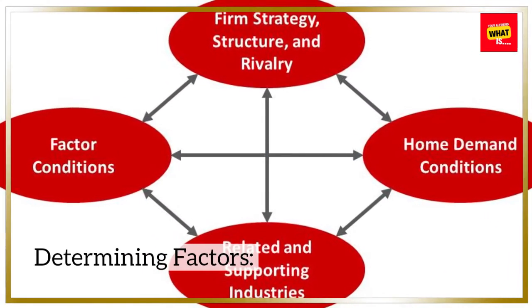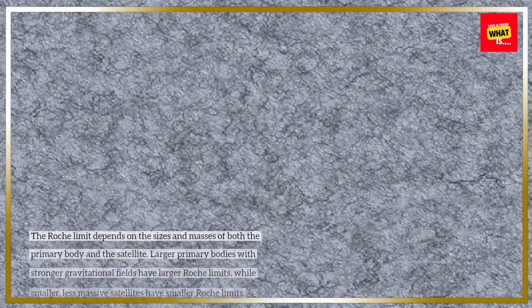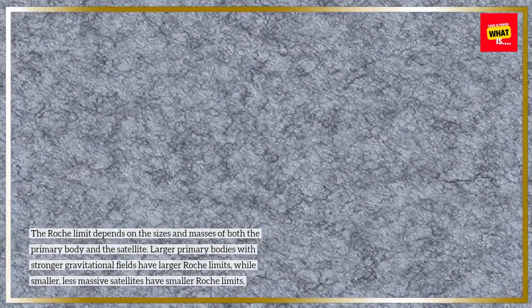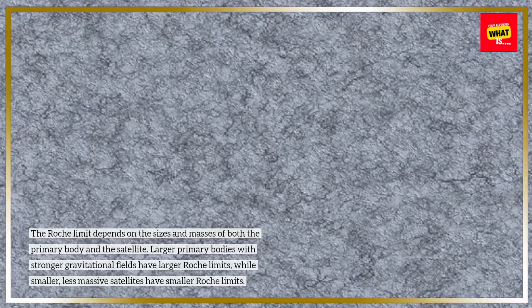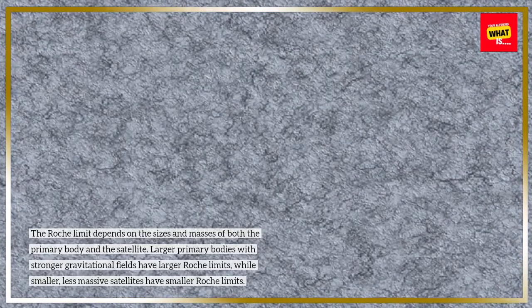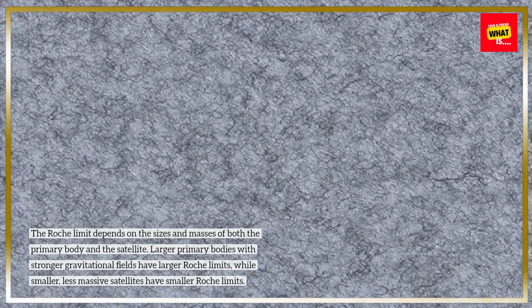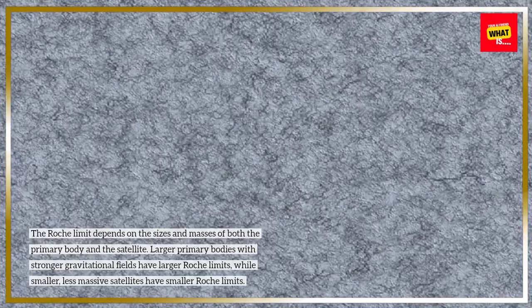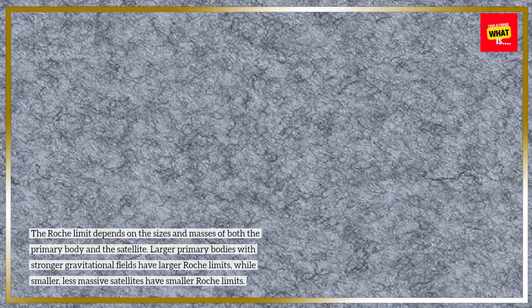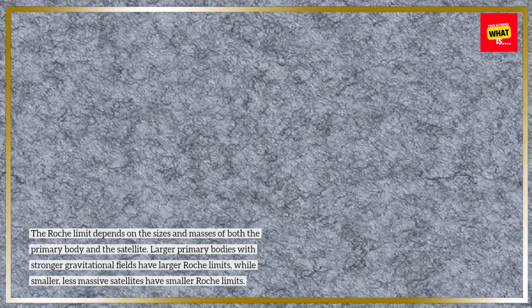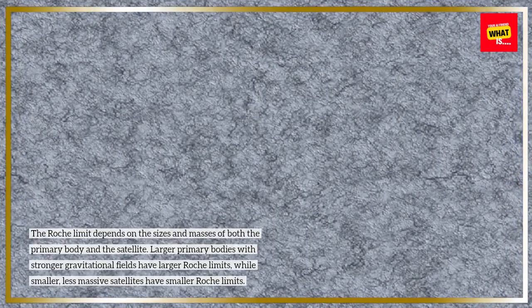Determining factors: the Roche limit depends on the sizes and masses of both the primary body and the satellite. Larger primary bodies with stronger gravitational fields have larger Roche limits, while smaller, less massive satellites have smaller Roche limits.